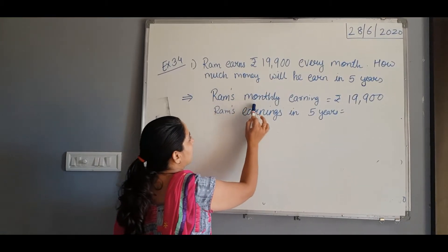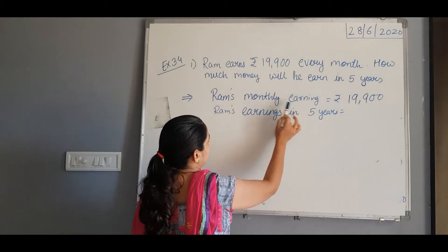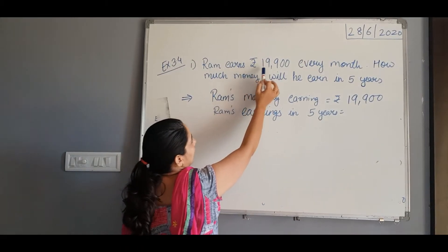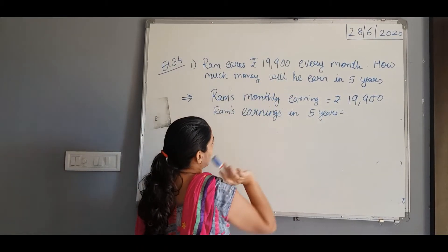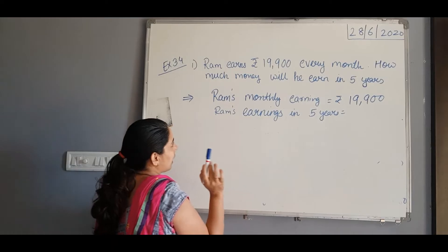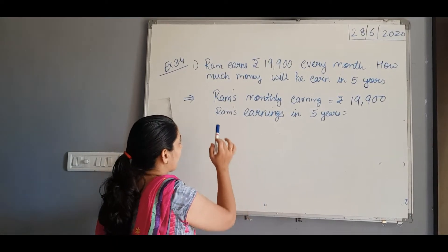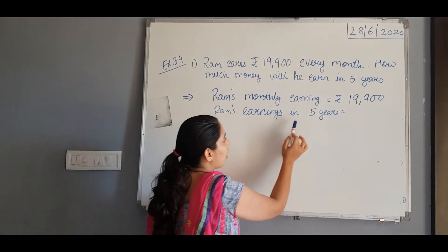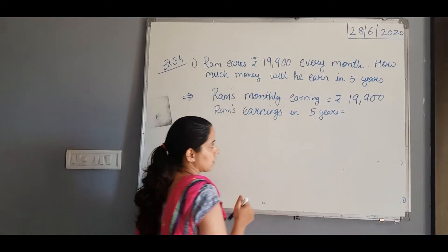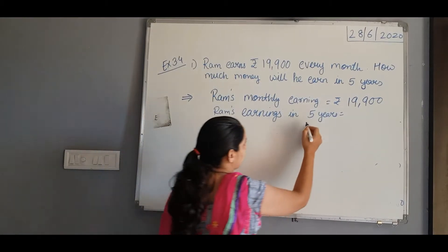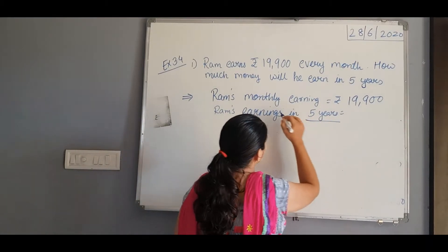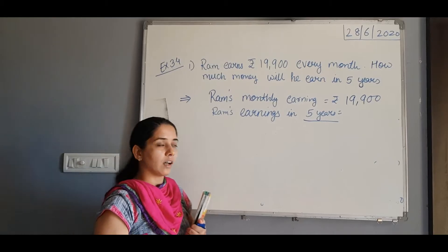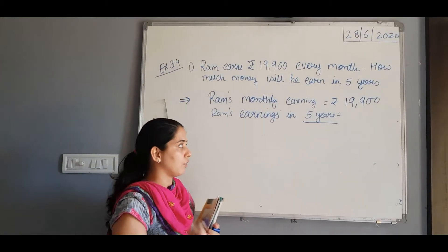Ram's monthly earning is rupees 19,900. Now what we have to find? We have to find Ram's earning for 5 years. Monthly earning is given and we have to find his earning for 5 years.